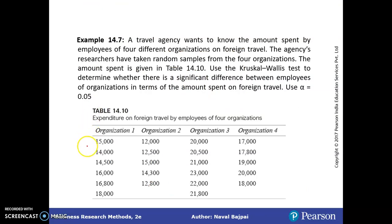So we have this data set. We have four organizations. So we have to find out whether these organizations differ in terms of the salary. A travel agency wants to know the amount spent by the employees of four different organizations on foreign travel. This is the amount they are spending on foreign travel. All these amounts are given. These are clubbed organization-wise. So we have to do Kruskal-Wallis test to check whether the amount spent on the travel is different or not.